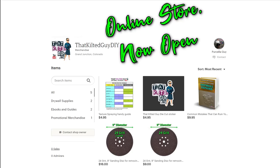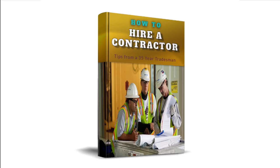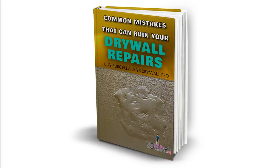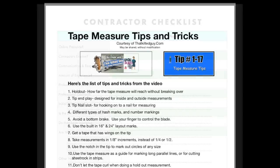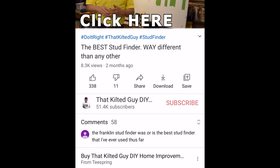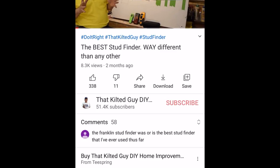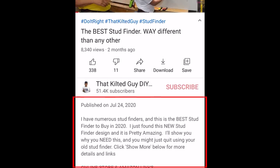Hey, be sure to check out my new online store where I've got things like some e-books that will help you out. I'm going to be releasing even more of those but I've got one on common mistakes that can ruin your drywall and so on. I've got some printable guides as well as some swag you can pick up, key chains, stickers, different things like that. So check it out. There's a link in the description down below.